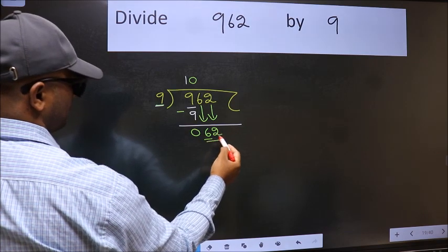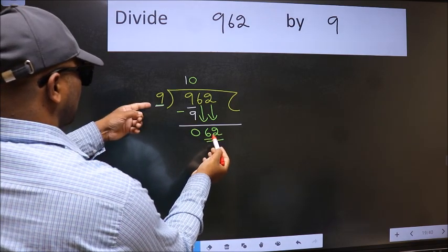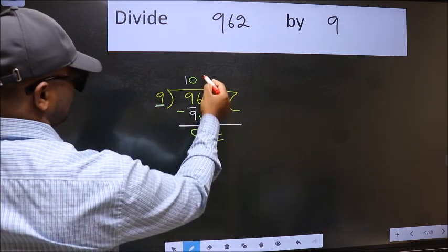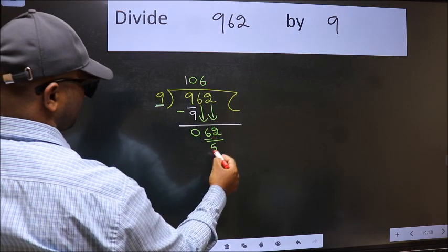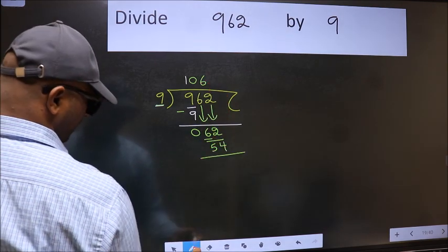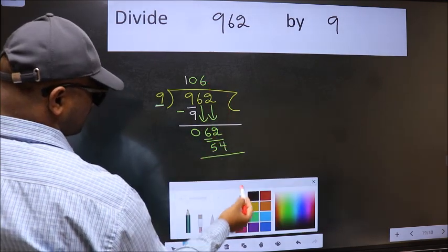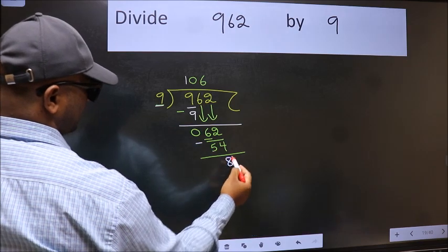Now we have 62. A number close to 62 in the 9 table is 9×6=54. Now we should subtract. We get 8.